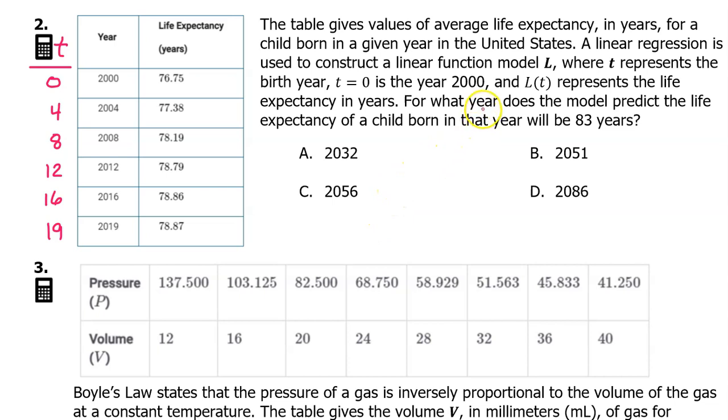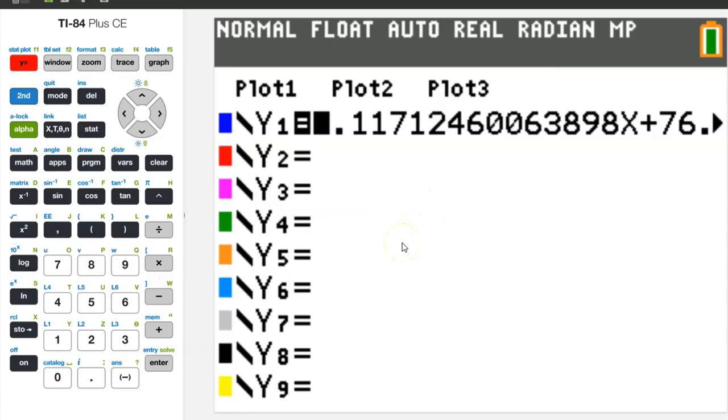Remember, our goal is to find the year when the life expectancy will be 83 years. So, we need to find where L of t is equal to 83. We just made a model for L of t, and we put it into Y1. So, we need to find where Y1 is equal to 83. We can find that using the calculator if we let the right hand side of the equation be Y2. So, if we put 83 right here and graph both of these equations, the intersection will be the solution that we're looking for. We need to adjust the window though.